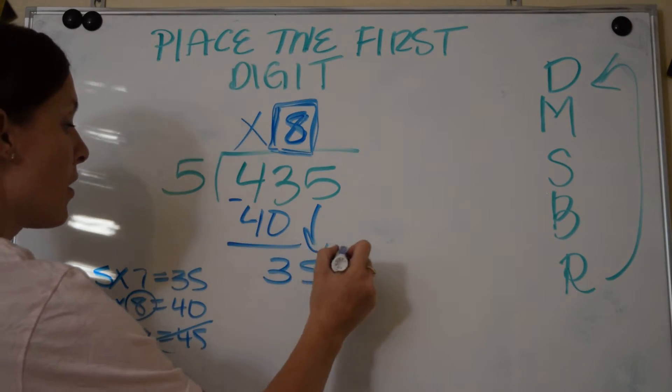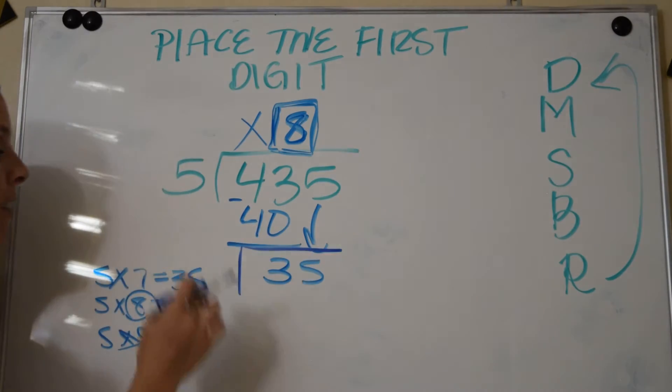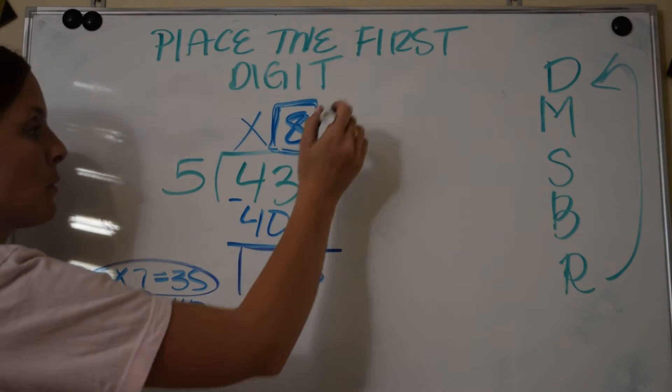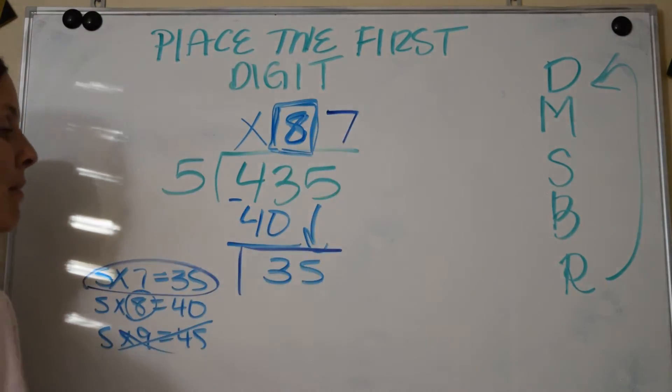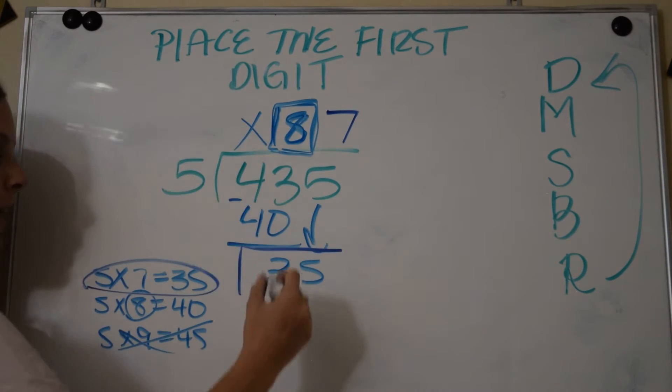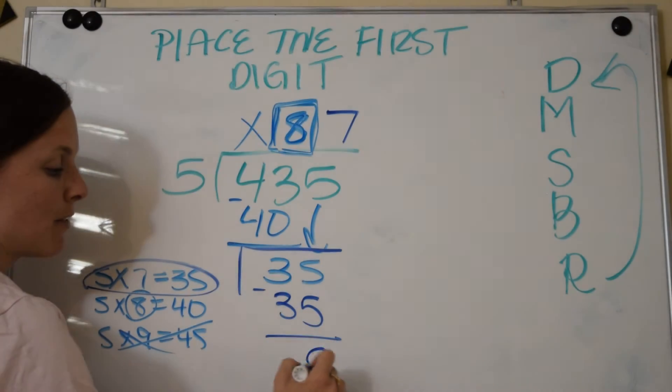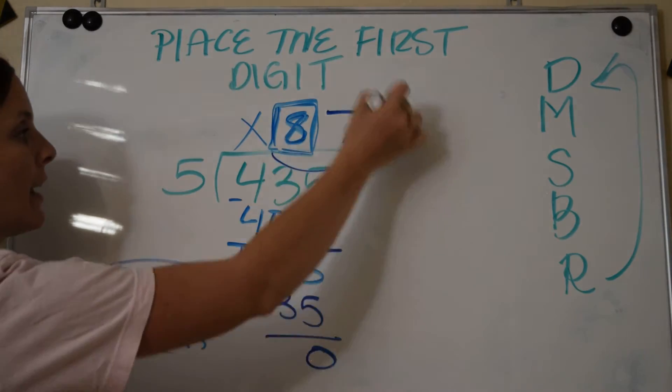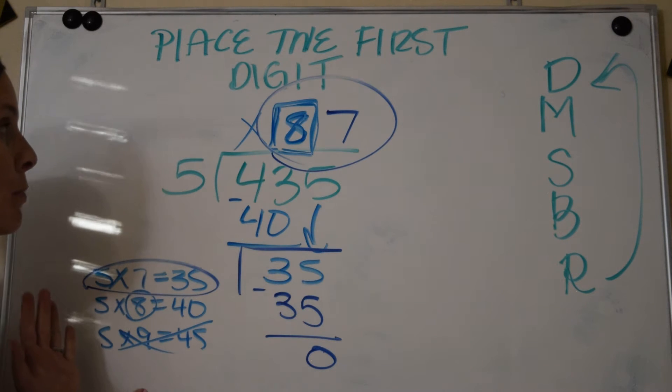And now I'm dividing a new number. Now I'm going 35 divided by 5. I'm back at the top. 5 into 35, that's a fact family, it goes in evenly 7 times. So I place my 7 right in the next open spot, right above that 5. And now I multiply: 7 times 5 is 35. Then I subtract and I have 0. I do not have another number to bring down, so our answer is 87.